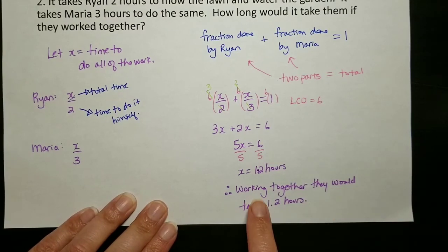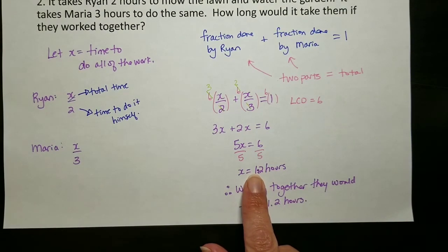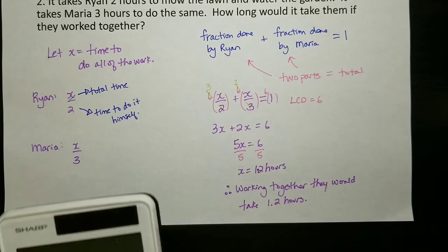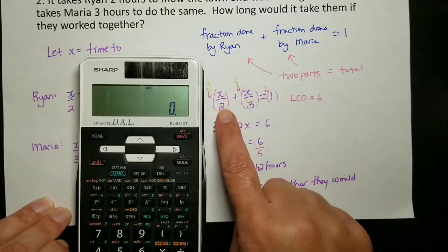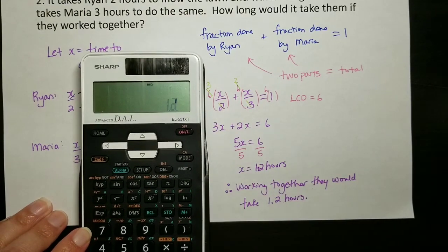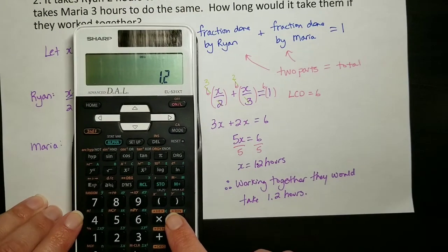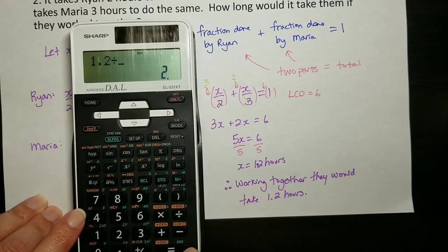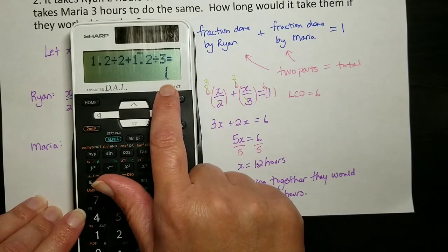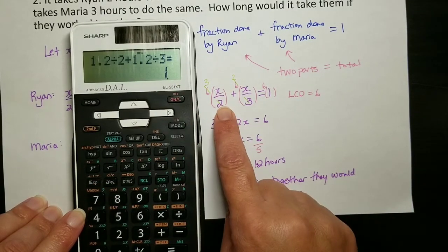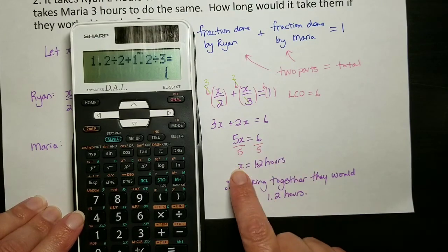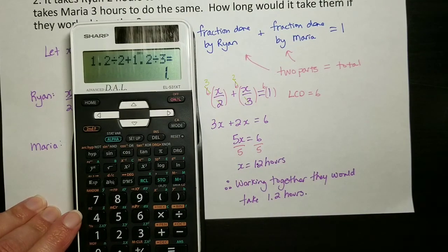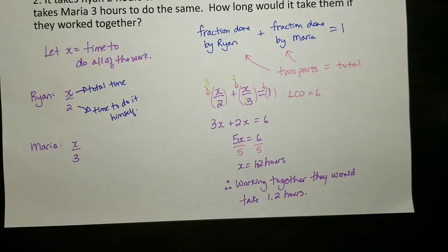You could do a check also. You could put 1.2 into your calculator and maybe show that step here. So if I did 1.2 divided by 2 plus 1.2 divided by 3, I end up with a 1. So that's good. 1.2 over 2 plus 1.2 over 3 ends up equaling 1. But again, of course you do have to show the work of solving the equation for all of these problems.